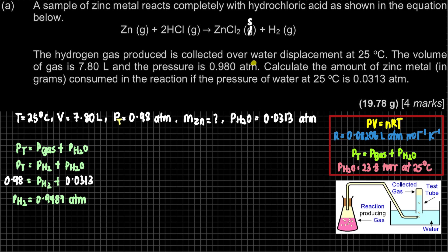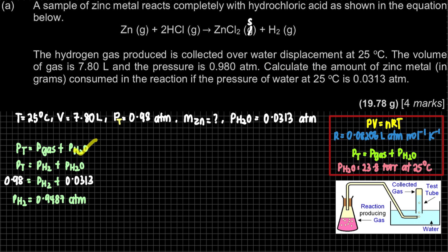When dealing with the water displacement method, always use P_total = P_gas + P_H₂O. P_H₂O is a fixed value. The gas component depends on the question — it could be hydrogen, nitrogen, chlorine, or ammonia. In this question, the gas is H₂.